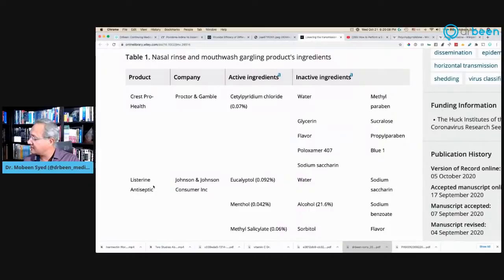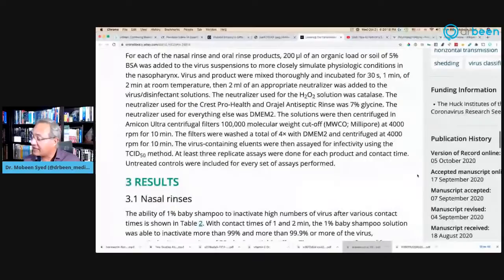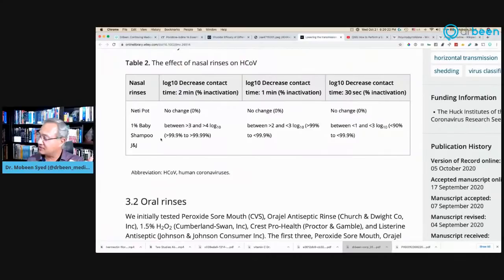So the basic takeaway is that Listerine probably is more readily available and should be good. And now if I go to their efficacy, that is very interesting to see. For the nasal rinses, neti pot did nothing. For 1% baby shampoo, that had 99.9% to 99.99% virucidal effect. That means it killed the virus after two minutes or one minute or 30 seconds.